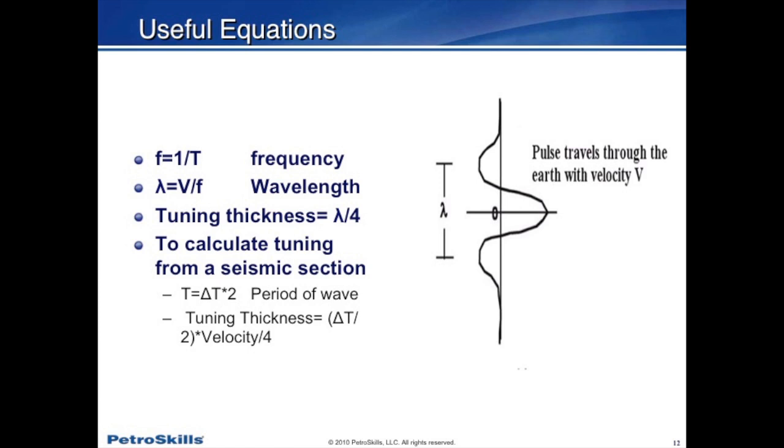There are several useful equations in this industry. One is frequency, which equals one divided by the period — the period being the amount of time it takes for a wave train to cycle through. The other one we use a lot is lambda or wavelength, which is the velocity of the formation divided by the frequency content of the seismic data. Those become important because if I know the period and something about the velocities of the rock, I can calculate the thickest formation I'm able to see on the seismic data. For instance, if I'm trying to map a sand that's about 50 feet thick but my seismic resolution is only 100 feet, that's a pretty good indication that I won't be able to see that reservoir, and I may have to use some different techniques.